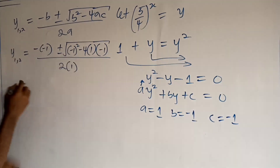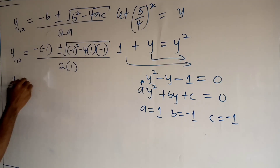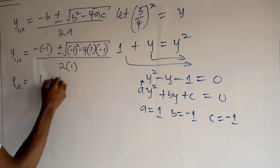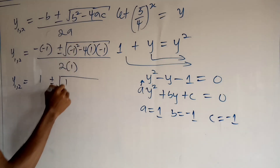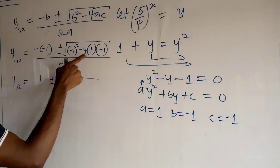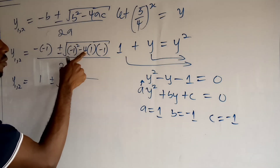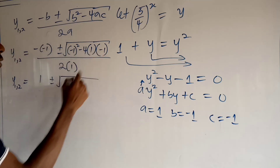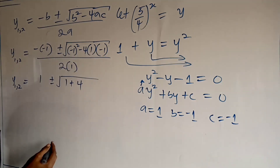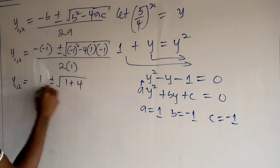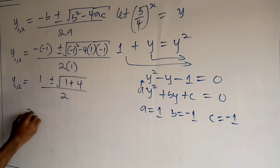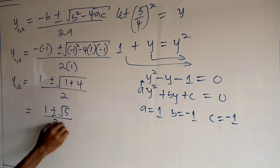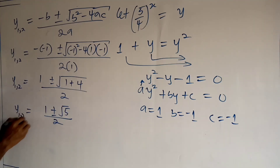The quadratic formula gives y₁,₂ equals negative b plus or minus square root of b squared minus 4ac, all over 2a. Substituting, we get y₁,₂ equals 1 plus or minus square root of negative 1 squared minus 4 times 1 times negative 1, all over 2. That simplifies to 1 plus or minus square root of 1 plus 4, all over 2, which gives us 1 plus or minus root 5, all over 2.